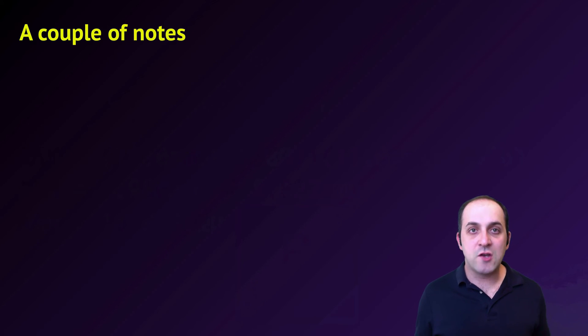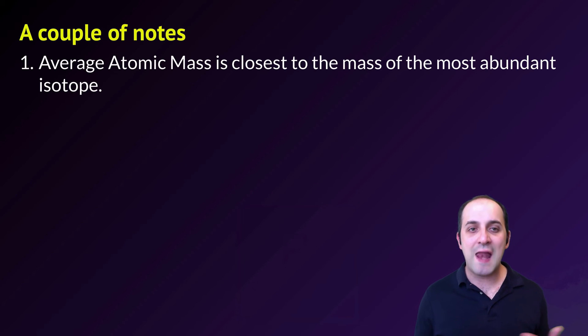As we wrap up, let's pay attention to a couple of notes. The first one is that average atomic mass is always going to be closest to the mass of the most abundant isotope.